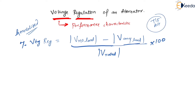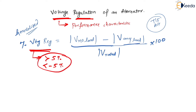Now let us understand the effect of voltage regulation. The percentage of voltage regulation should not be greater than five percent and should not be less than minus five percent. Let us see what happens if the voltage regulation is more than five percent, using an alternator as an example.